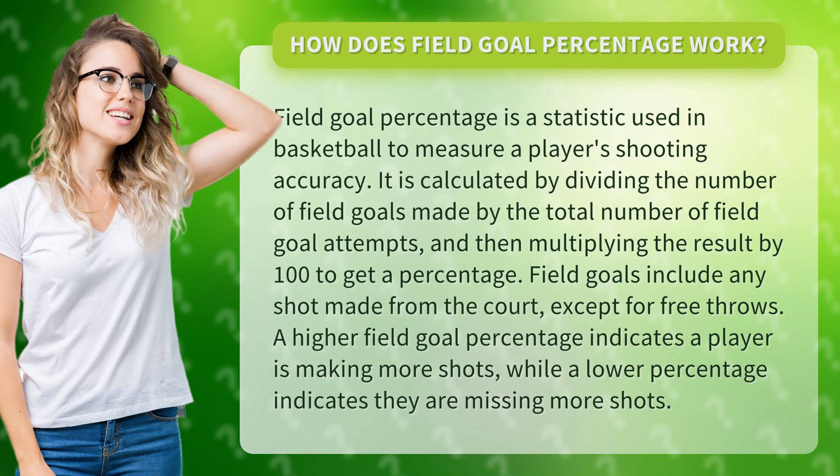Field goals include any shot made from the court, except for free throws. A higher field goal percentage indicates a player is making more shots, while a lower percentage indicates they are missing more shots.